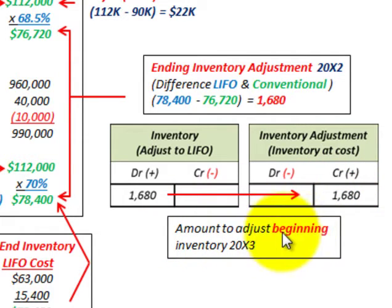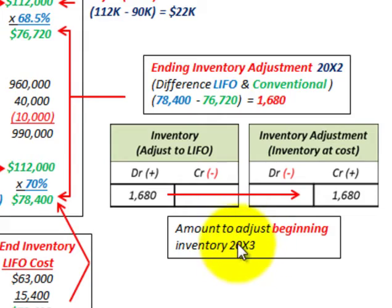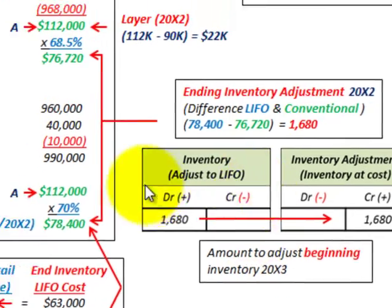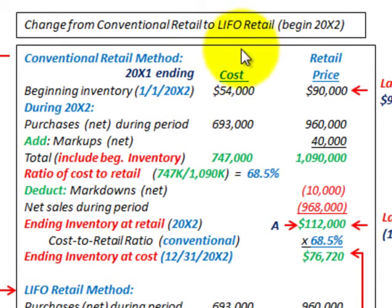This $1,680 is also the amount we would need to adjust our beginning inventory for 20X3 in the next year. That takes care of our conversion from the conventional retail method to the LIFO retail inventory method.